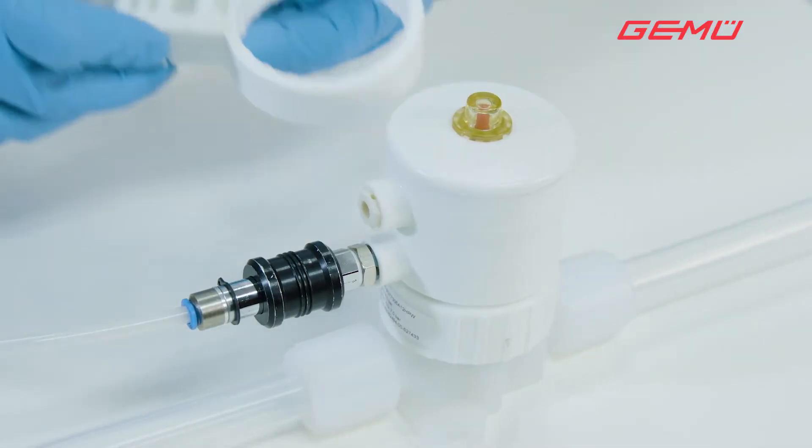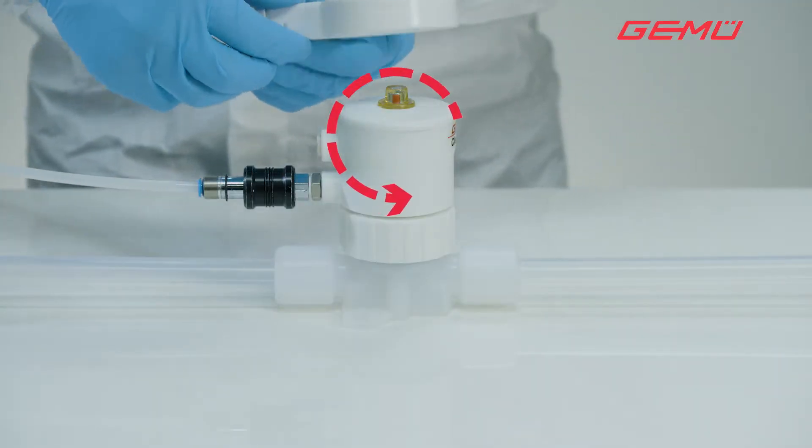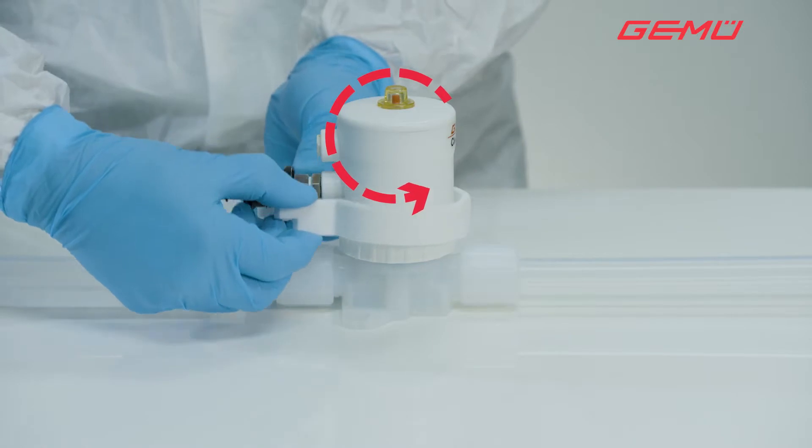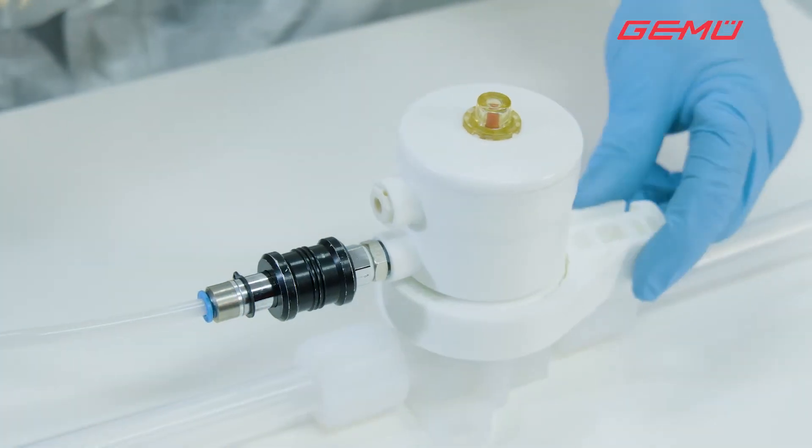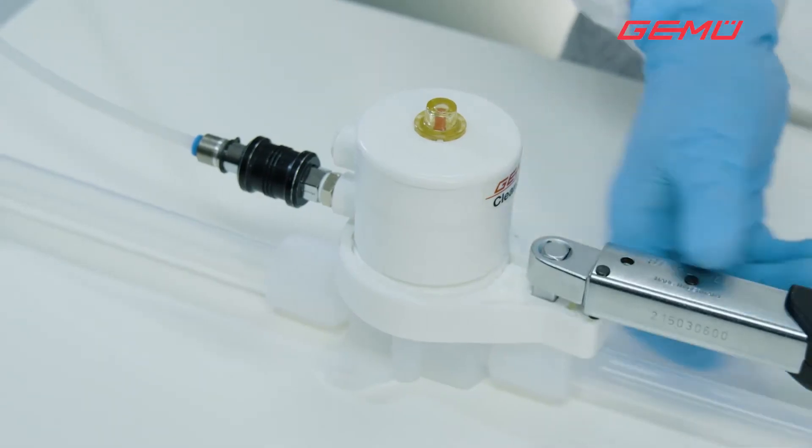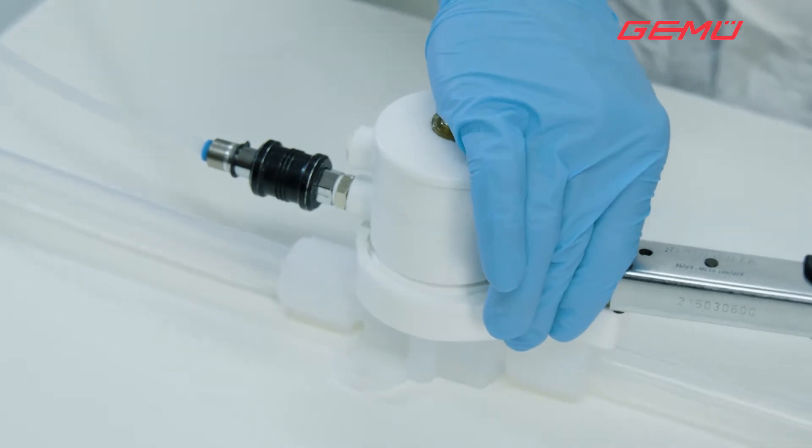Now position the GEMÜ service tool in the correct position on the central nut and undo it anti-clockwise. A torque wrench can be used for assistance.